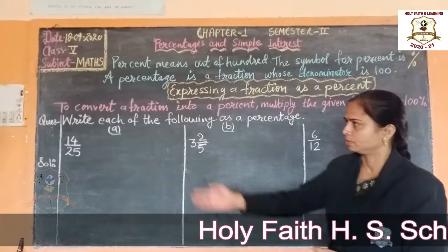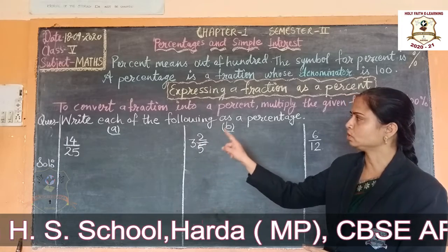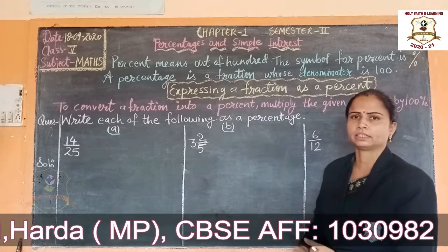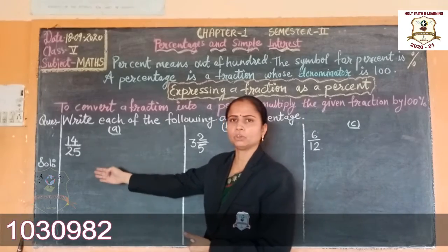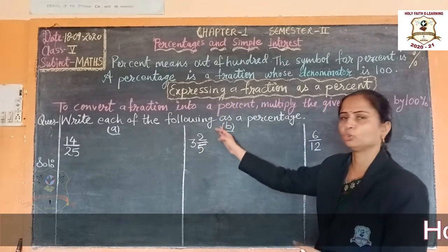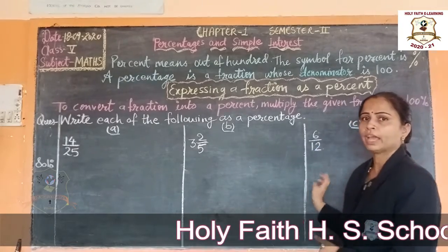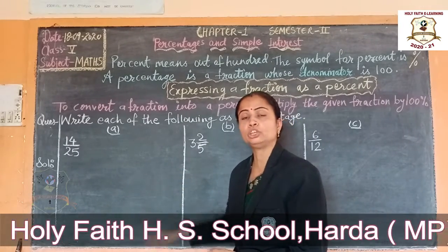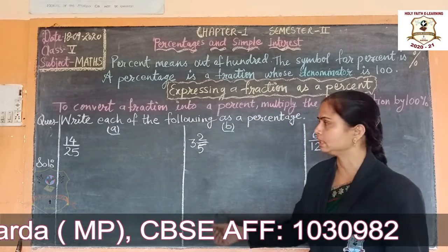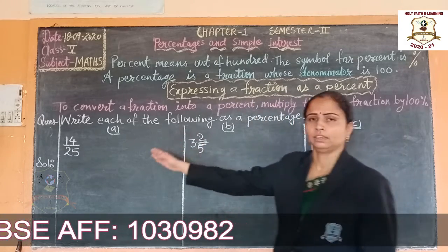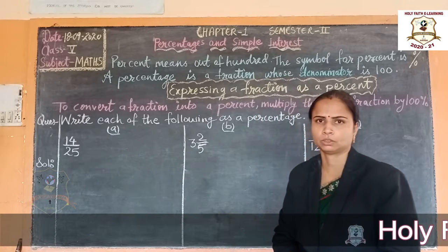So first we will see our first question: write each of the following as a percentage. The given fractions are 14 upon 25, 3 and 2 upon 5, and 6 upon 12. We have to convert these fractions into percentage. To convert into percentage, we will multiply the given fraction with 100 percent.